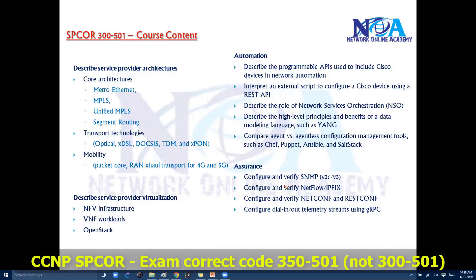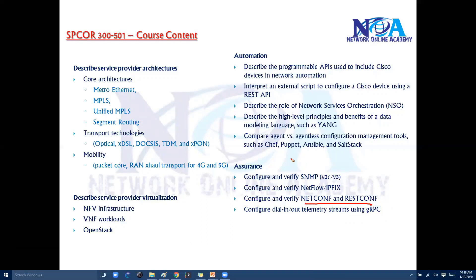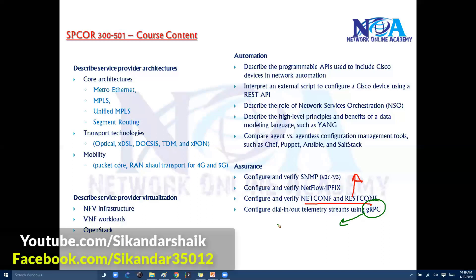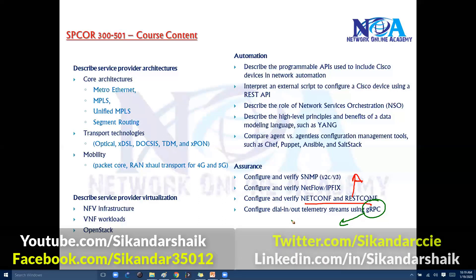We'll also cover assurance technologies related to automation: NETCONF and RESTCONF, which are network configuration protocols responsible for installing, manipulating, and deleting configurations on networking devices via a simple interface. Finally, gRPC (Remote Procedure Calls) is a mechanism by which a networking device can be managed, and its configuration and data can be retrieved and installed remotely.